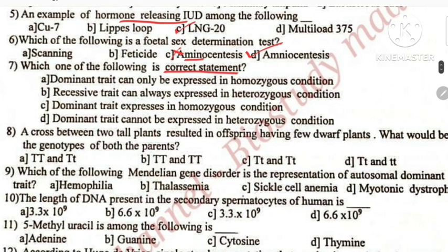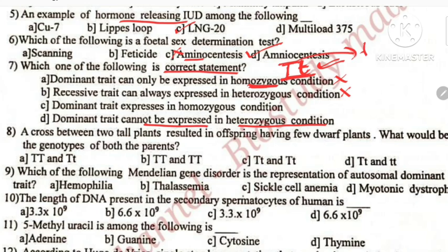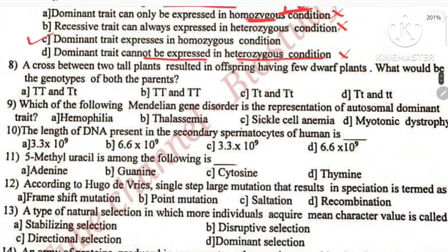Next, which of the following is the correct statement? Careful. Dominant trait expressed only in homozygous condition — that is wrong. Dominant trait is expressed even in heterozygous condition. Recessive trait always expressed in heterozygous condition — this is also wrong. Dominant trait cannot be expressed in heterozygous condition — also wrong. So the right option is option C.